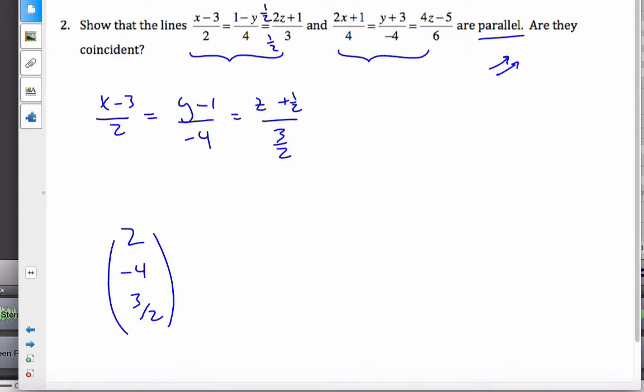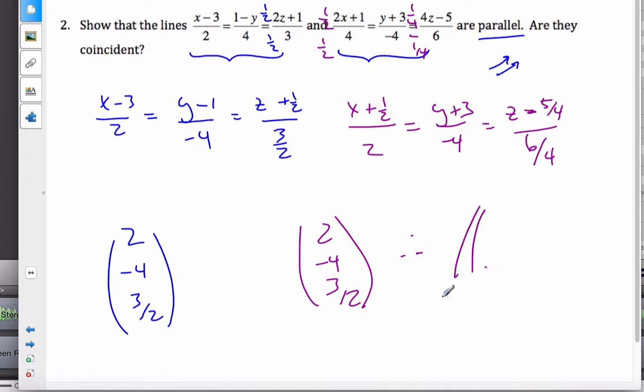I want to know if it's parallel to this one. Well, similarly, I have to rewrite this. Again, I'm going to multiply by a half over a half, which gives me x plus a half over 2 equal to y plus 3 over negative 4. It's already in the good form. And here, I'm going to go by a quarter and a quarter, which gives me z minus 5 fourths over 6 divided by a quarter, which this direction vector is 2 minus 4, and that is 3 halves, therefore parallel.